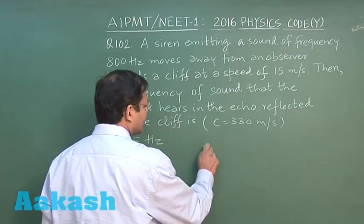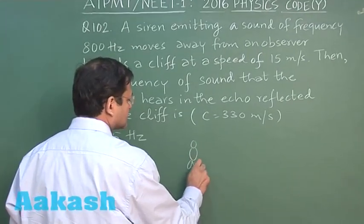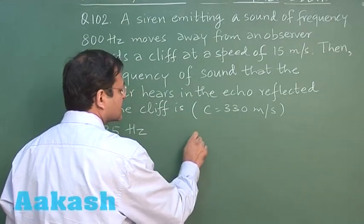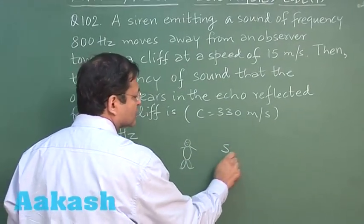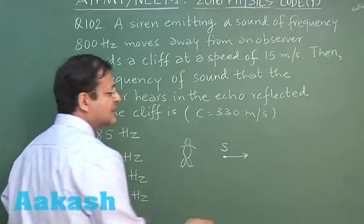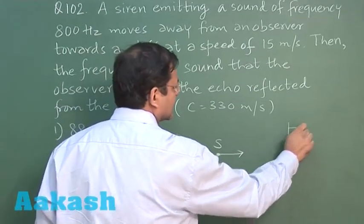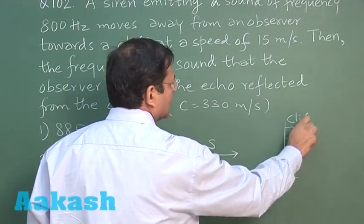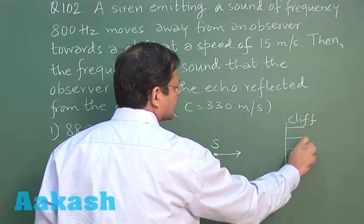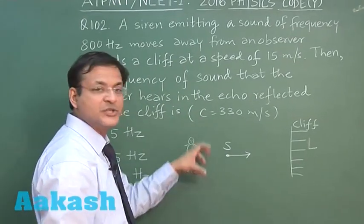So let us suppose you have an observer here, somewhere here this is the observer. Let us suppose the source is moving away from it, so source is moving this side and the cliff is here. You understand, cliff is here, you can call it the listener, this is the listener.